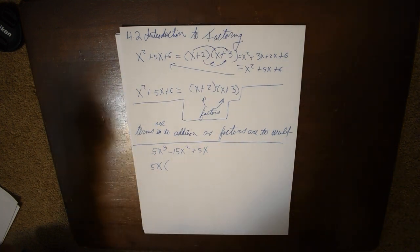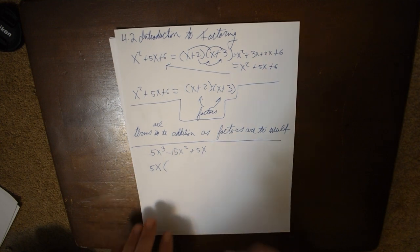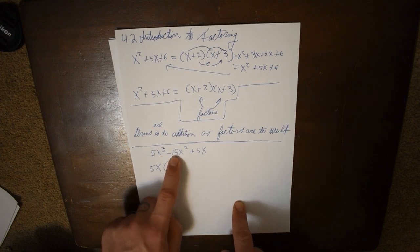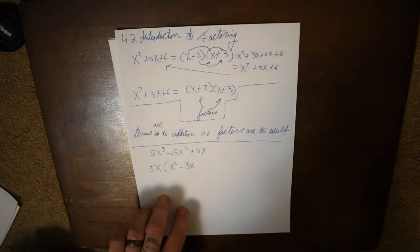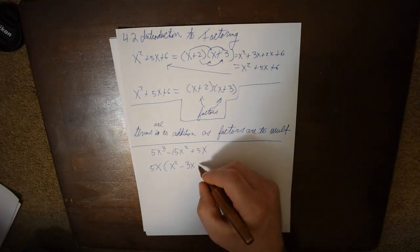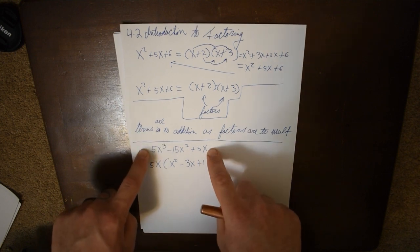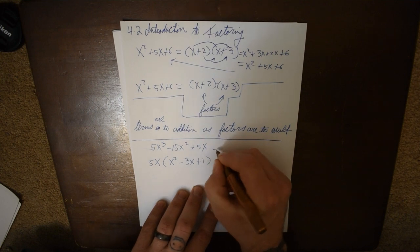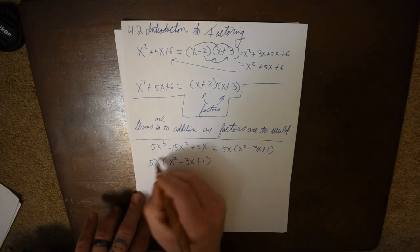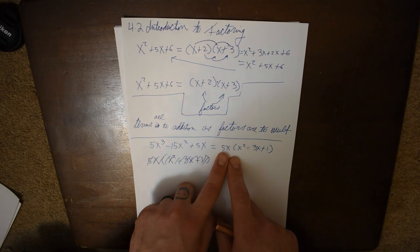Now we're doing multiplication in reverse. I ask: 5x times what equals 5x cubed? I need an x squared. Then, 5x times what equals negative 15x squared? I need a negative 3x. And 5x times what equals 5x? I'd need to multiply by a positive 1. So we have factored 5x cubed minus 15x squared plus 5x into 5x times the quantity x squared minus 3x plus 1. These two polynomials are equal — all we did was pull out what was common from each term.